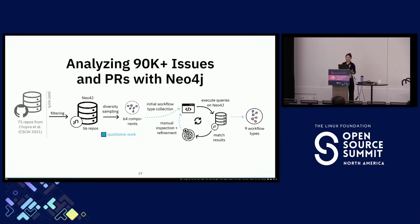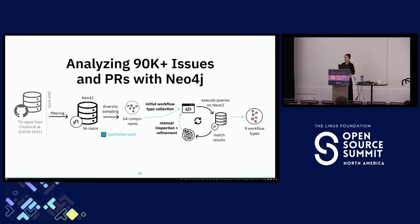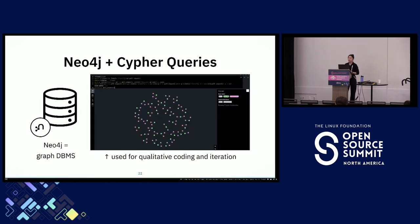We started by taking a sample of 56 large open source projects hosted on GitHub, based on prior work done by Chopra et al. We took all of the contents of each of the issues and PRs, their metadata, and the links between them, and we analyzed more than 90,000 issues and PRs. We then took a diversity sample of about 60 clusters of connected issues and PRs, and within that sample we analyzed each of the contents to understand the collaboration that was happening. From there, we observed very frequent recurring structural patterns that might represent work practices in open source software development.